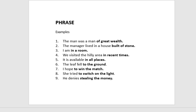Example five: 'It is available in all places.' Here 'in all places' is a phrase — it doesn't have a subject and it doesn't have a verb. 'Is' is the main verb of the whole sentence. Example six: 'The leaf fell to the ground.' Here 'to the ground' is a phrase — there is no subject and no verb. 'The leaf' is the main subject and 'fell' is the main verb of this sentence.